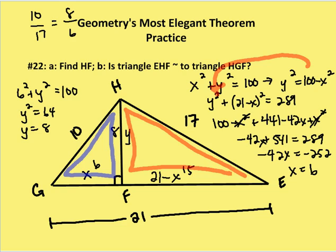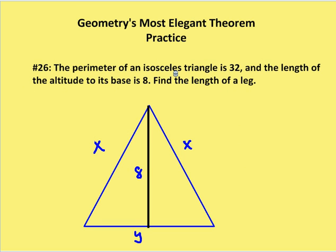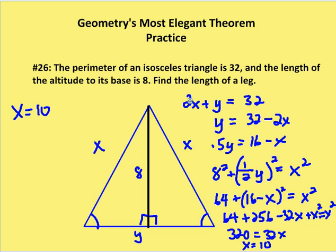Moving on to the next problem: the perimeter of an isosceles triangle is 32 and the length of the altitude to its base is 8. Find the length of a leg. I define the two equal legs as X and the base as Y. The perimeter gives 2X plus Y equals 32, so Y equals 32 minus 2X. Half of Y equals 16 minus X. Using the Pythagorean theorem: 8 squared plus (half Y) squared equals X squared.